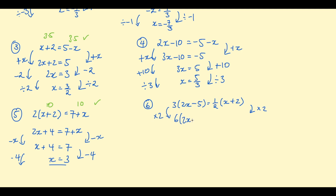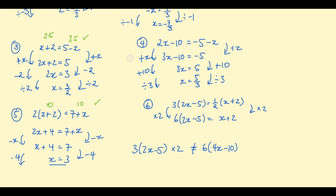Important warning: when multiplying 3 times (2x take 5) by 2, do not multiply the numbers inside the brackets as well — that would incorrectly give 6 times (4x take 10), which multiplies by 4 not 2. Only the outer coefficient of 3 becomes 6. So the left hand side is 6 times (2x take 5) and the right is x plus 2.